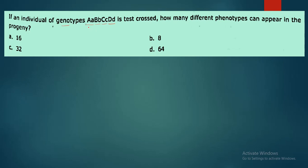What are the heterozygotes? There are 1, 2, 3, 4 heterozygotes. How many phenotypes can appear in the progeny? What is the formula of phenotype? 2 raised to n.